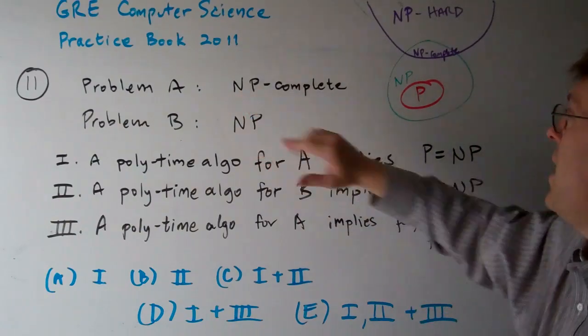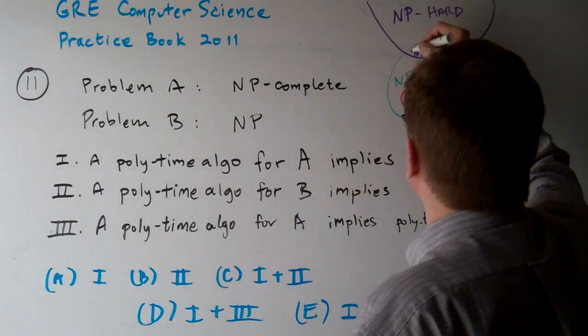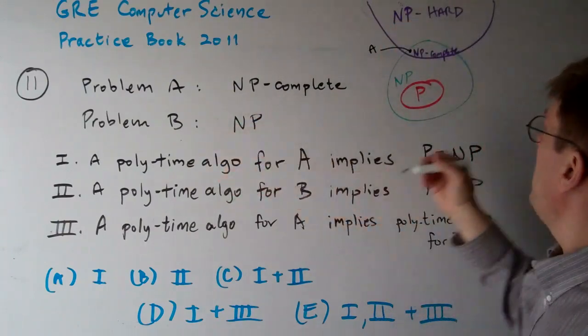Your problem A is NP-complete. That's problem A. Your problem B is NP.